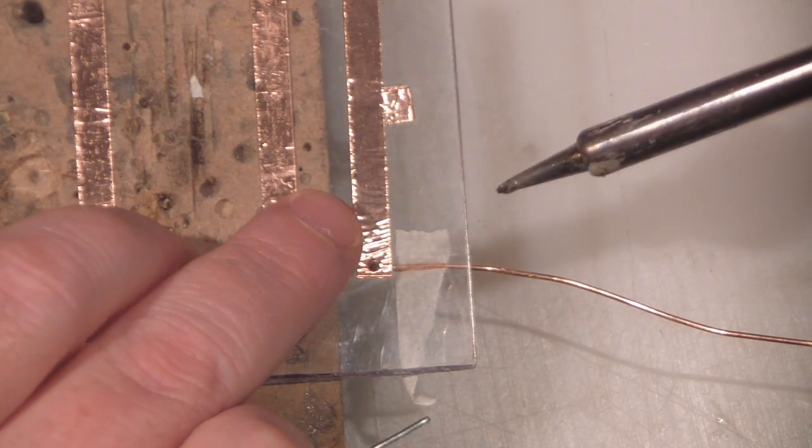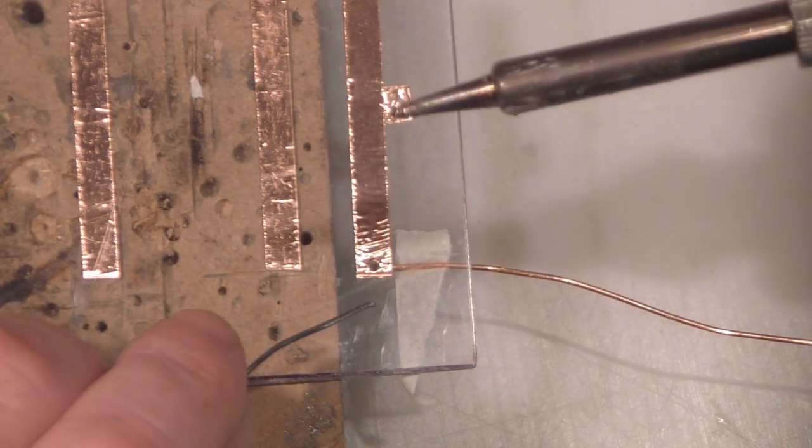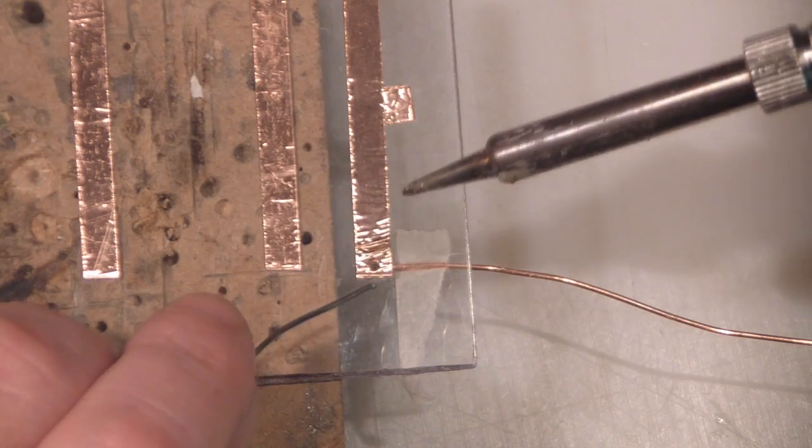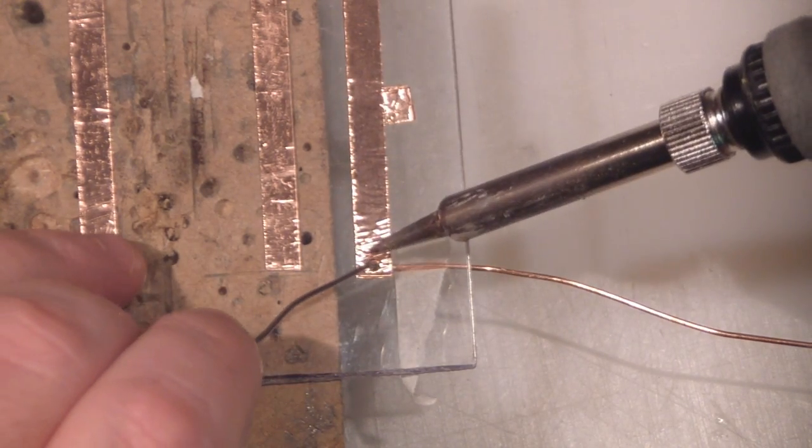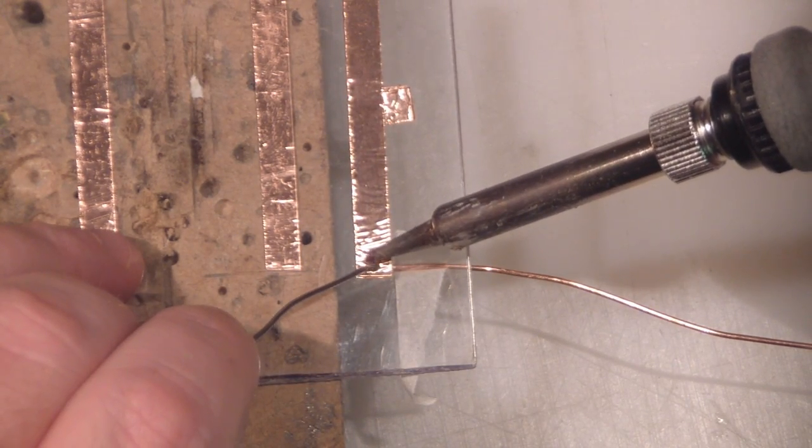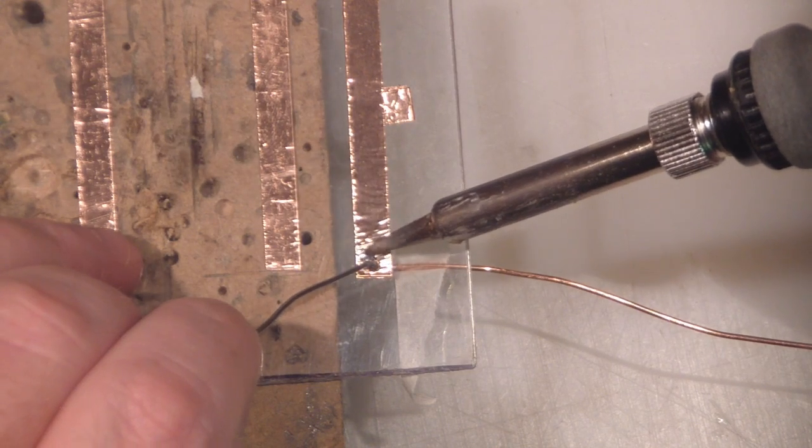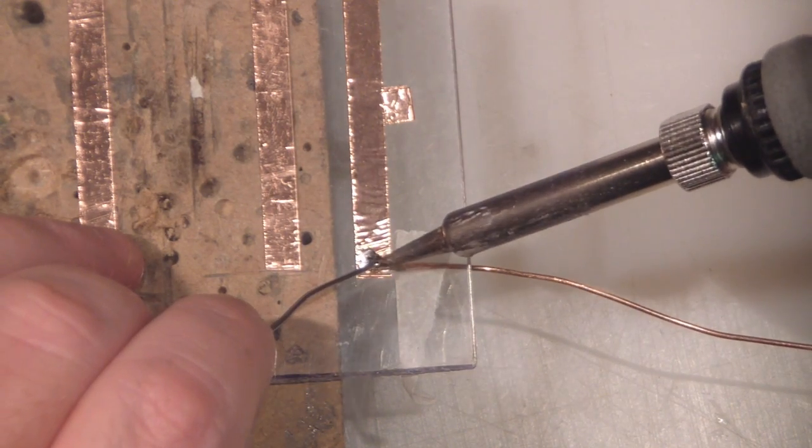So now I'm going to apply a little bit of solder to actually hold this side in place. Now, although you can solder to this tape like I've said, it's a good idea to not keep the soldering iron on there longer than what you need to, because it does melt the actual adhesive on the back of the tape.